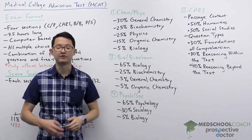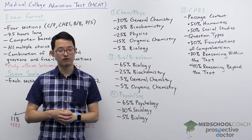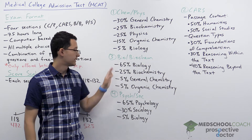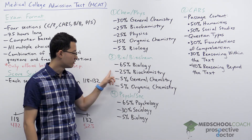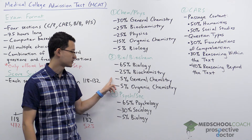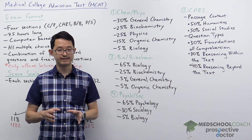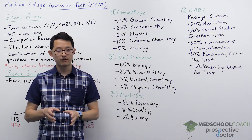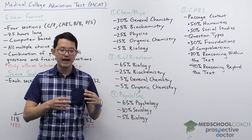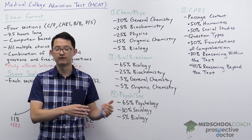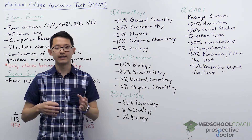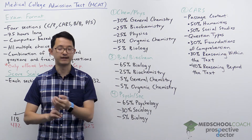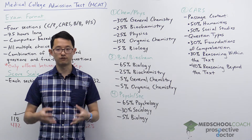The third section is the Biological and Biochemical Foundations of Living Systems, or the Bio-Biochem section. This section is 65% biology, 25% biochemistry, 5% general chemistry, and 5% organic chemistry. The biology content is split — about half covers topics like genetics and molecular biology, and the other half focuses on physiology, including the nervous system, endocrine system, digestive system, and so forth.